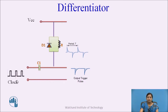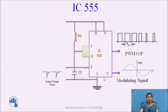The frequency of the output negative spikes is the same as the frequency of the clock signal. The clock signal is adjusted exactly at the sampling frequency, so the distance between all clock pulses is the sampling period, that is Ts. These negative trigger pulses are then given to the IC555.